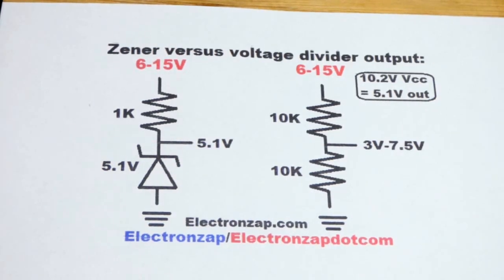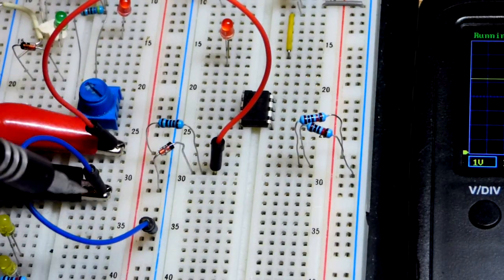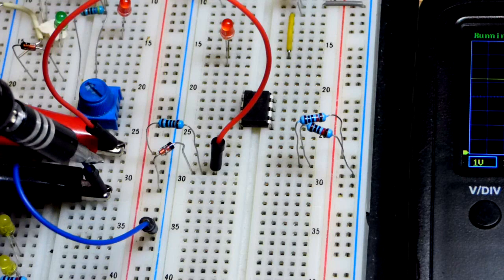But in any case, let's start looking at this on the breadboard. So here we got the oscilloscope cables. I just clamped them to jumpers there.